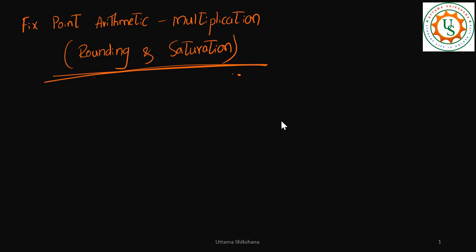Hey guys, welcome back. In the previous video we had seen the importance of adding 0.5 when we convert from float to fixed-point. We saw that there was very good precision and we didn't lose any information after performing the example operation, which was multiplication. In this video we will mainly look into two more operations required when performing multiplication: rounding and saturation.